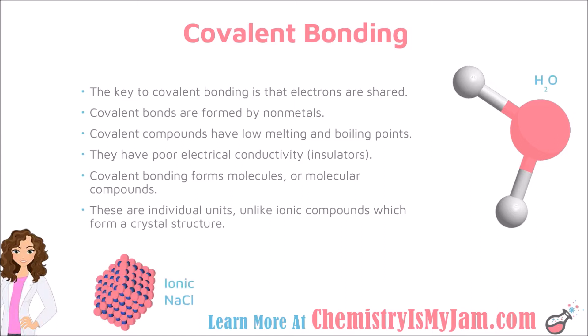What do I mean by them being individual discrete units? Let's compare formulas of covalent versus ionically bonded compounds to see the difference. Here on the right, you have a water molecule, which is made up of covalent bonds. Water will always be one oxygen with two hydrogens. The chemical formula gives me the actual number of atoms present. In the case of an ionic compound like sodium chloride, the Na and the Cl give me the ratio of the atoms present. In an ionic compound, you have a series of positive and negative ions lining up to maximize the attractions between charged particles. So in the case of a molecule, the chemical formula gives you the actual atoms present, whereas in the case of an ionic compound, it gives you the ratio of the ions present. These are discrete individual units, whereas ionic compounds form a crystal structure.